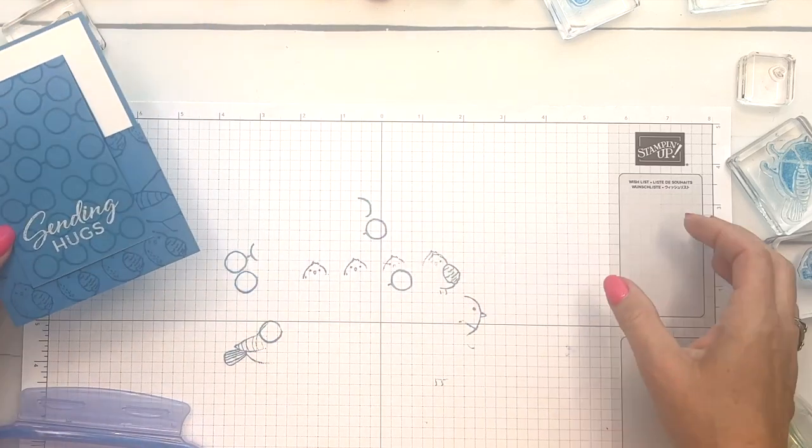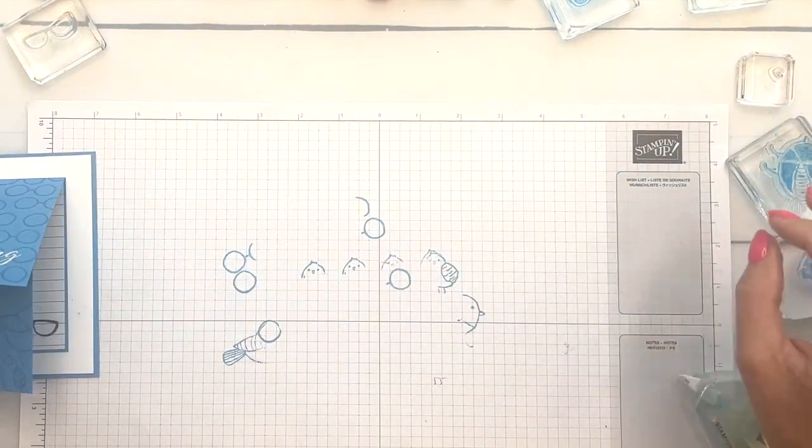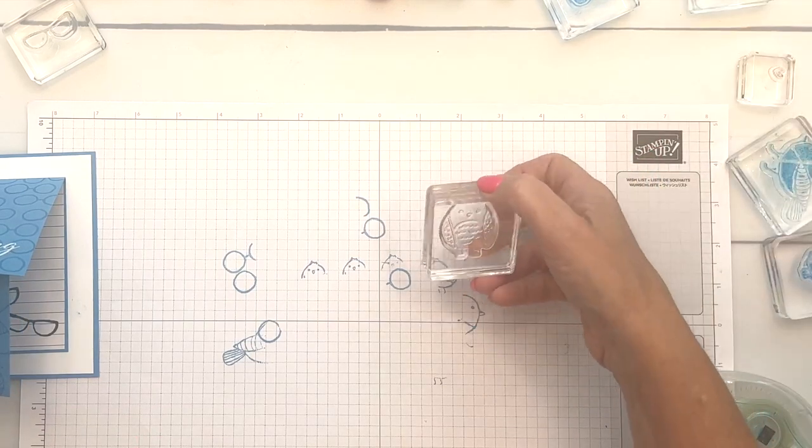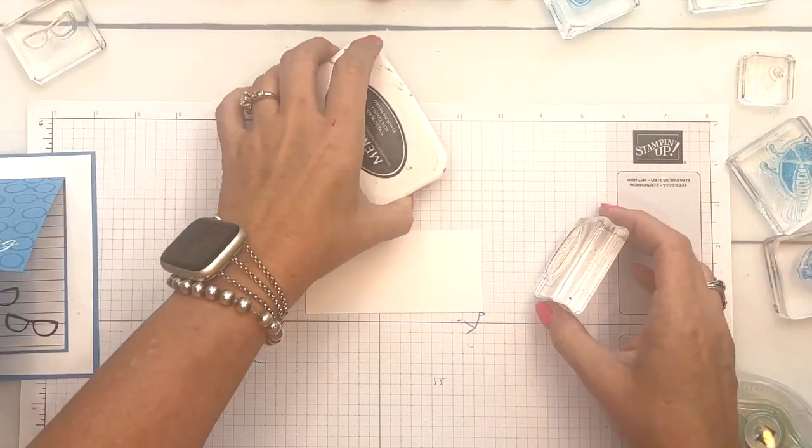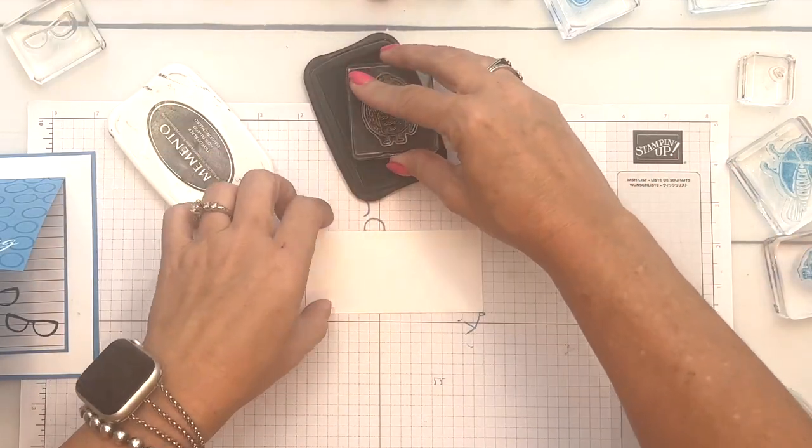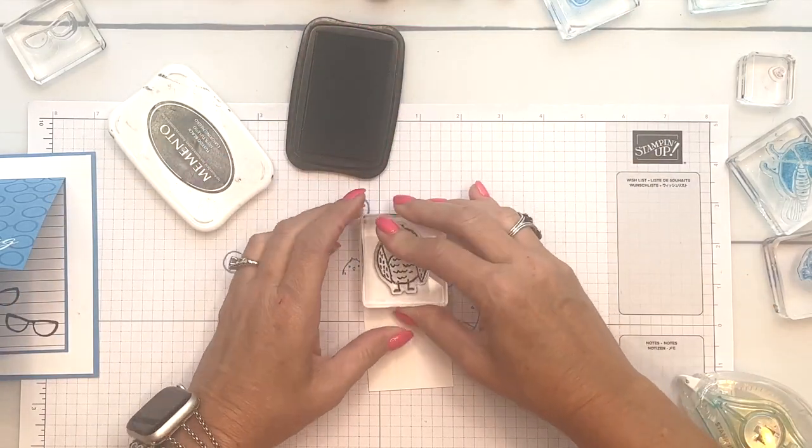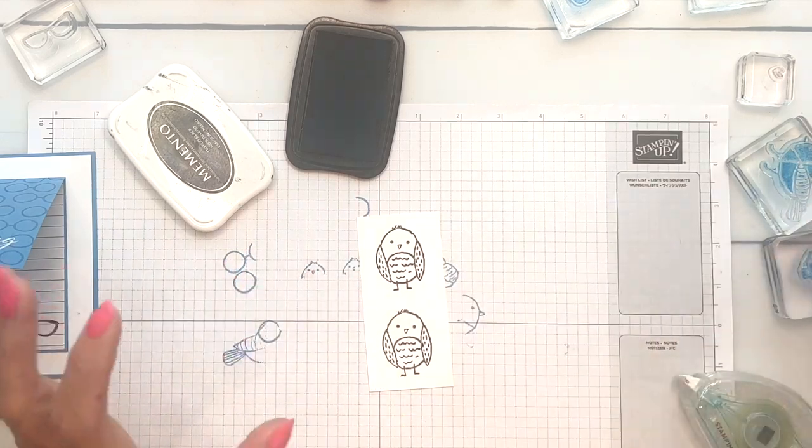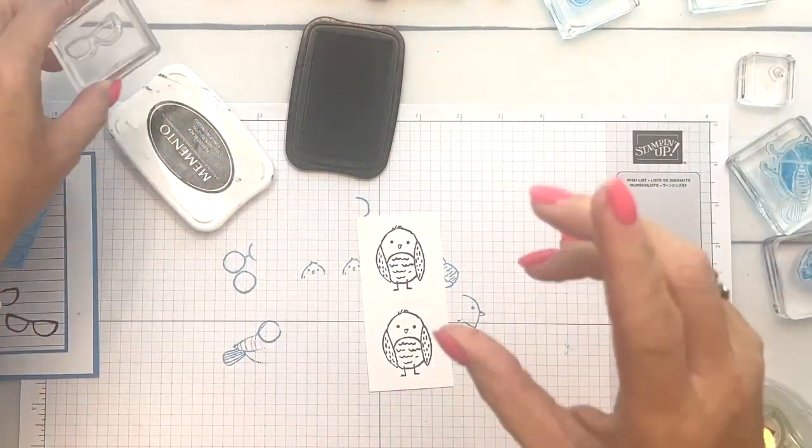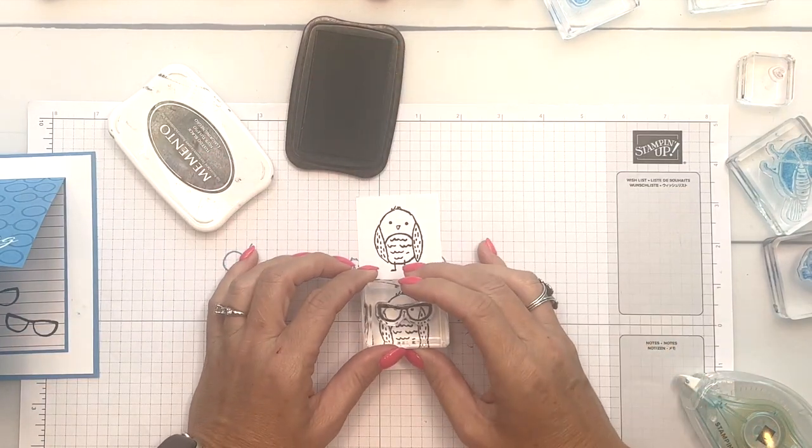Now we've got the basic construction of our card created. Let's do our little bird. I'm going to use this bird, the front-facing bird, and we're going to stamp him or her twice with Memento Black, once here and once here. The second one is just for the glasses because we're going to cut the glasses out and pop them up onto our original bird.